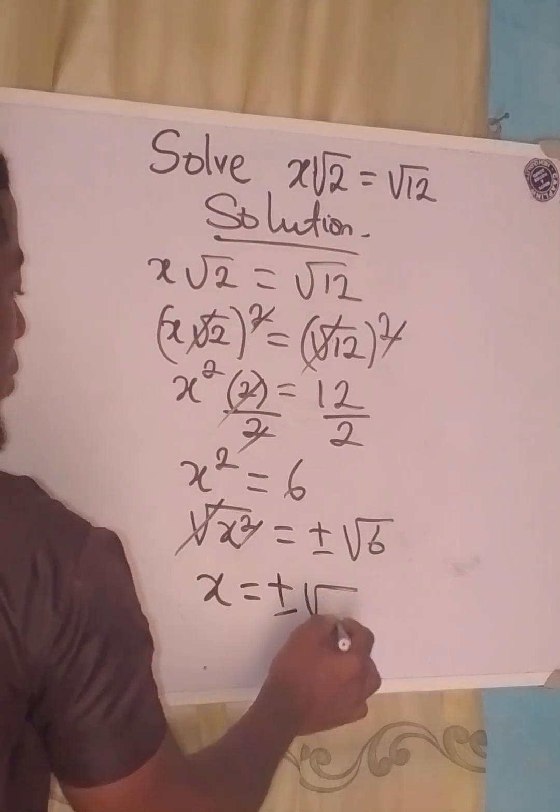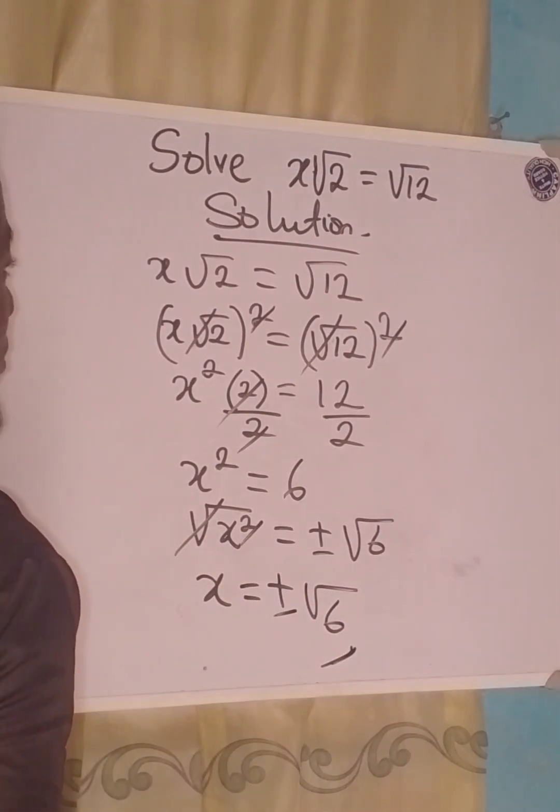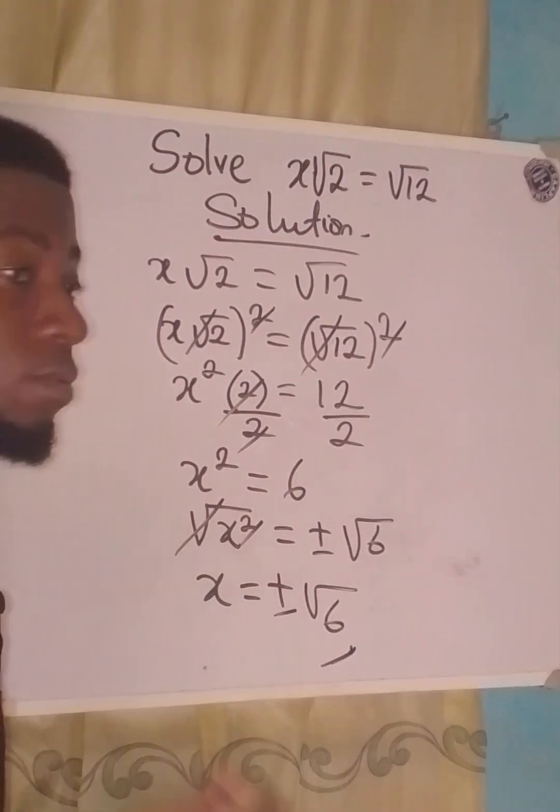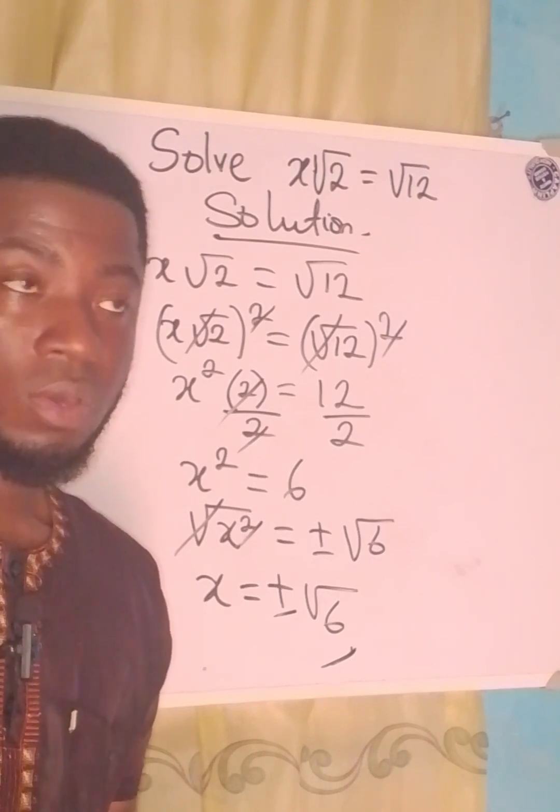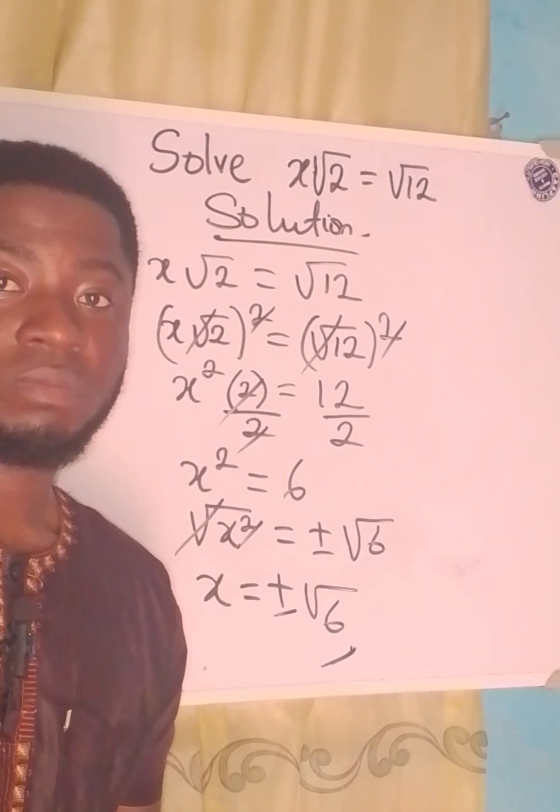So this becomes the value of x. The question is, do you think x can have two values, plus or minus? Let me have your response in the comment section.